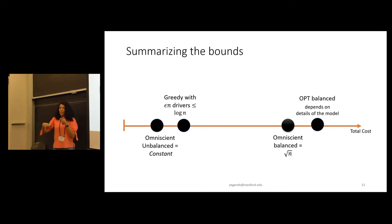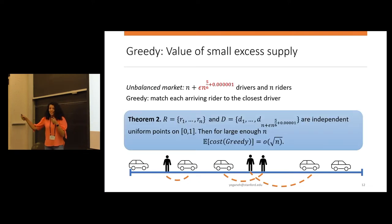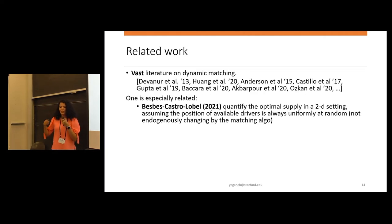So now maybe the next question is that epsilon n drivers is a lot to add. What can I do with sublinear number of additional drivers? So we show that even sublinear drivers is enough to beat the square root n of the omniscient. So this is almost like n to the power .83. And with that many additional drivers, greedy is better than square root n, which was the omniscient. So this is very light. It's still better than omniscient with the balanced market.